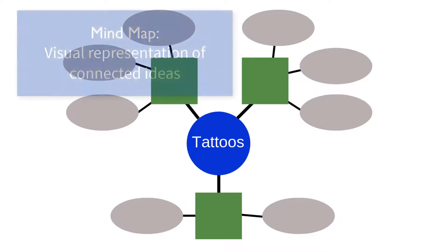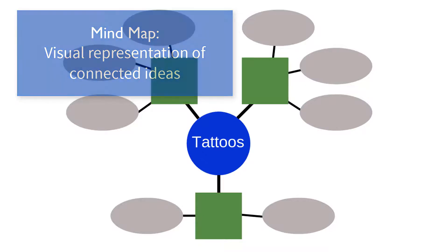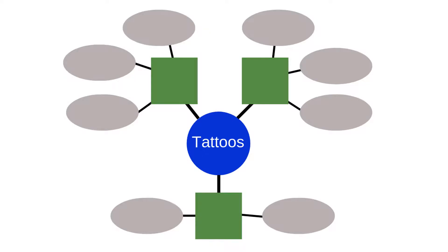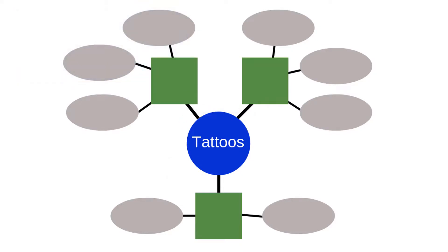Another option for defining your research question is to use a mind map to collect and connect your ideas. A mind map is a visual representation that includes a central idea and surrounding related and supporting topics. Using a mind map along with the five W's can help you facilitate connections and organize your ideas. All mind maps start with an initial broad idea, and then you can create branches — as many as you need — that represent connecting ideas.